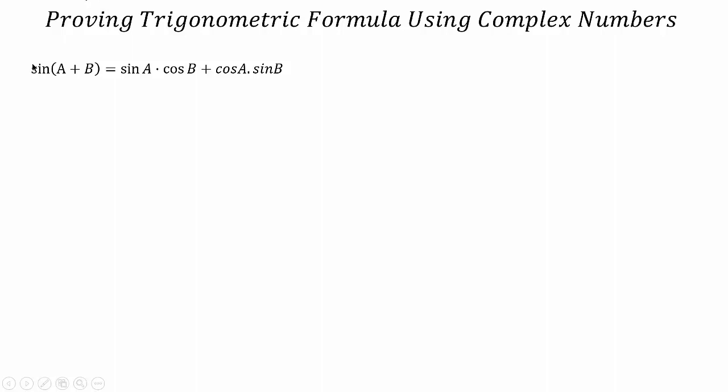Basically the two formulas are sin(A + B) = sin(A)cos(B) + cos(A)sin(B) and cos(A + B) = cos(A)cos(B) - sin(A)sin(B).